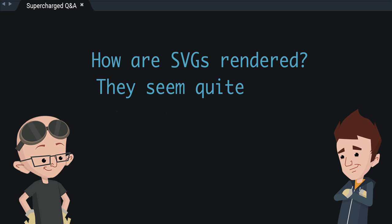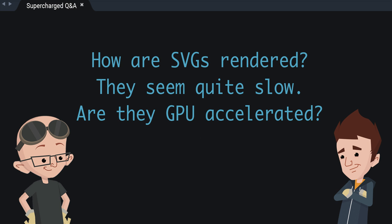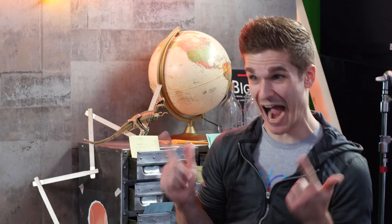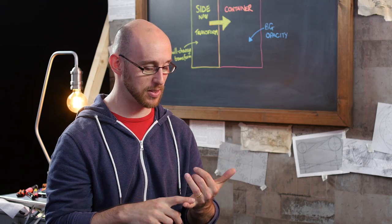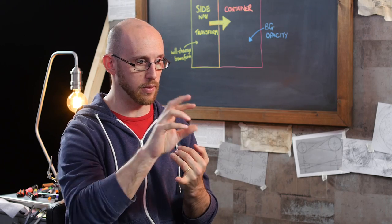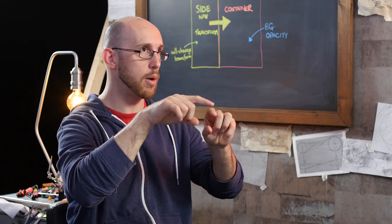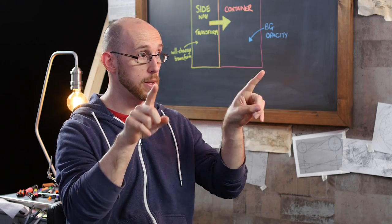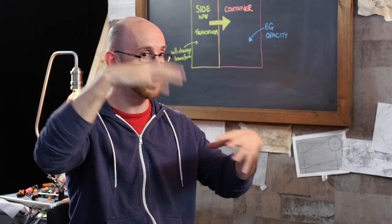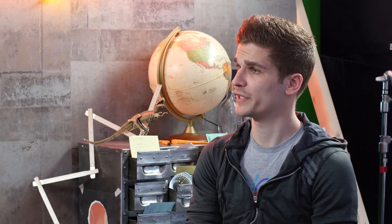How are SVGs rendered? They seem quite slow. Are they GPU accelerated? SVGs are actually DOM elements — not only the SVG itself, but every child is an actual DOM element, like a rectangle. So you've got to be careful, because if you move them around, they're going to trigger layout. But the layout operation will stop at the SVG root — it's one of the times we have a layout boundary, where layout is not document-scoped but scoped to the SVG element.